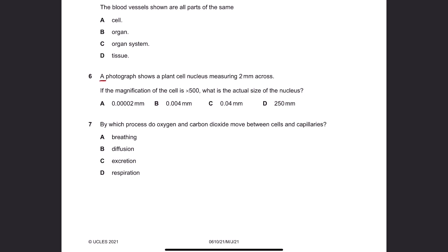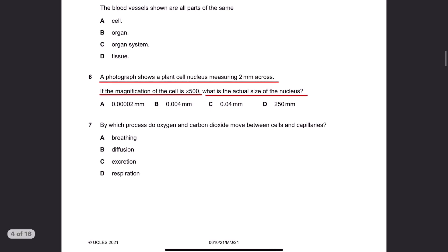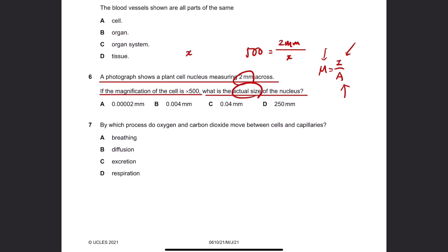Number 6. A photograph shows a plant cell nucleus measuring 2 mm across. If the magnification is ×500, what is the actual size of the nucleus? This is a typical M = I/A question: magnification equals image size over actual size. We know magnification is 500 and image size is 2 mm. So actual size = 2 mm ÷ 500. The answer is B.